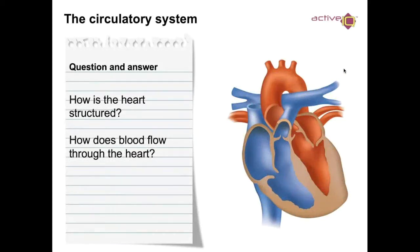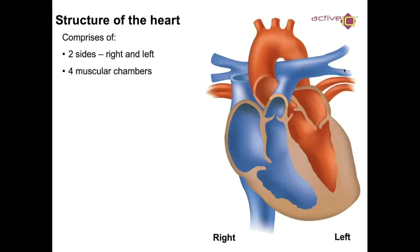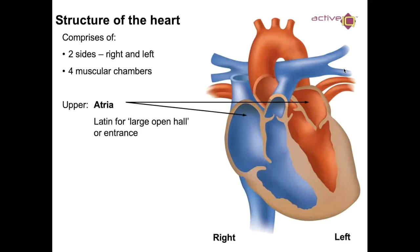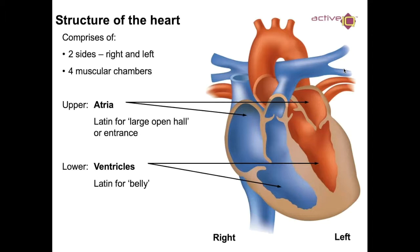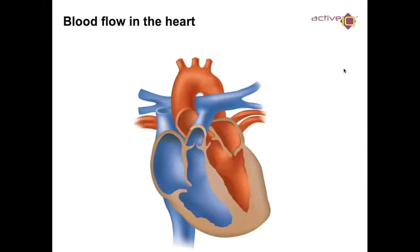Quick overview of heart structure: we have two sides — right and left — and four muscular chambers. The atria (Latin: 'open hall or entrance') are the upper chambers. The ventricles (Latin: 'belly') are at the bottom of the heart. Blood flows from atria to ventricles. We have the superior vena cava at the top and the inferior vena cava at the bottom.